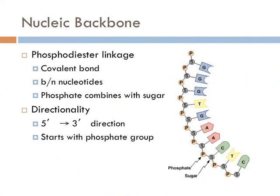Nucleic acids are polymers of nucleotides. Just like proteins are linked together via peptide bonds, nucleotides are linked together by a bond known as a phosphodiester linkage. Specifically, this phosphodiester linkage is a covalent bond between two nucleotides. It's where a phosphate combines with the sugar, which in turn combines with the phosphate, which in turn combines with another sugar, and so on. This creates what is known as the nucleic backbone.